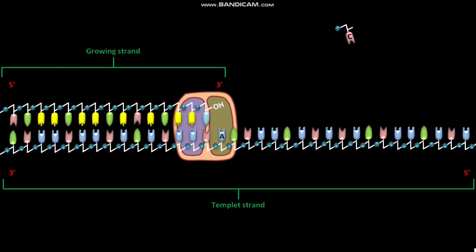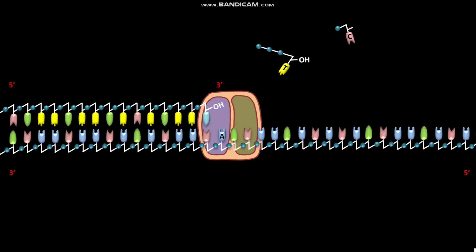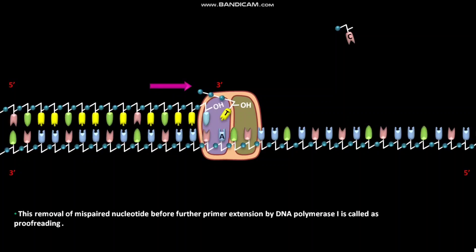The DNA Polymerase 1 then slides forward and resumes its polymerization activity in the 5' to 3' direction. This removal of mispaired nucleotide before further primer extension by DNA Polymerase 1 is called proofreading. Proofreading improves the inherent accuracy of the polymerization reaction 10 to the power 2 to 10 to the power 3 fold.